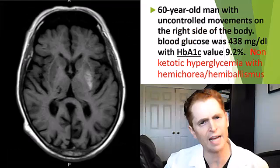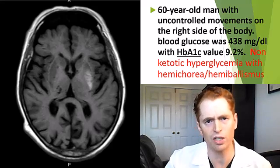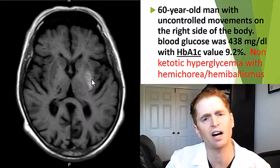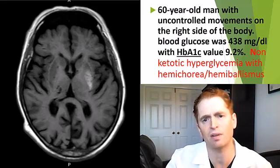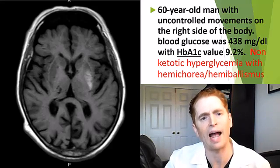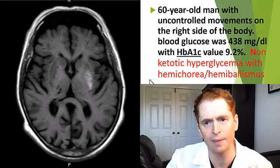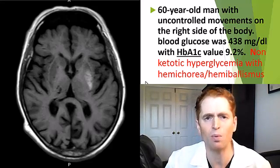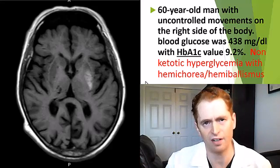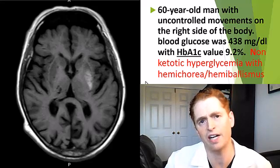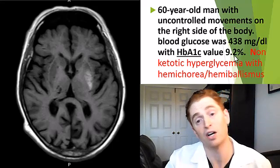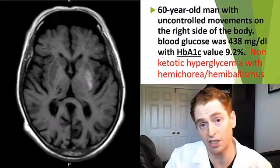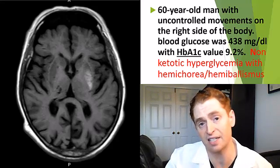This is the MRI of the 60-year-old man with uncontrolled movements on the right side. In the left putamen, there is a bright T1 signal consistent with non-ketotic hyperglycemia with hemichorea and hemiballismus — abnormal movements on the contralateral side of the body due to very elevated blood sugars causing toxicity. In my experience, this disease more commonly occurs with blood glucose over 500 and hemoglobin A1c around 14–15; the 9.2% value here is quite low. Bright T1 lesions in the basal ganglia can also occur in carbon monoxide poisoning or manganese toxicity.